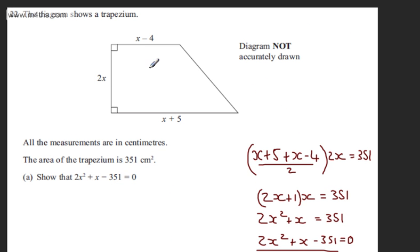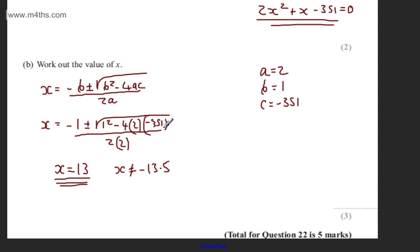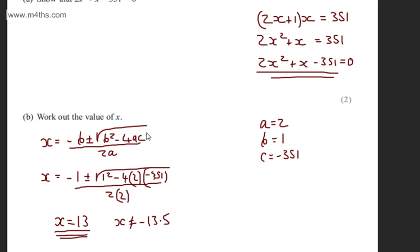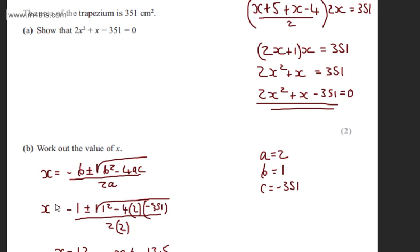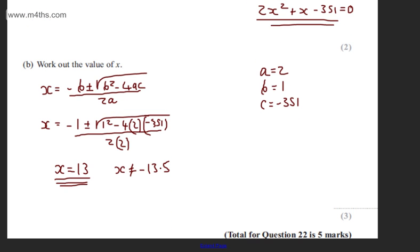If we think about it, x can't equal -13.5, as it would give this length of -27. If you want to go ahead and try to factor it, you're more than welcome to do so. It's a calculator paper, so I'm simply going to use the quadratic equation, which is given to me in the formula book. Final answer, x = 13, and that's worth three marks. Thank you.